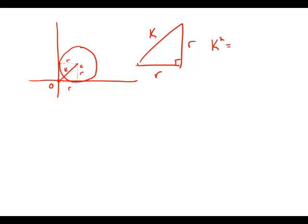K squared equals R squared plus R squared. So K squared equals two R squared. Divide by two. K squared over two equals R squared. Take a square root of both sides and we get R equals the square root of K squared over two.